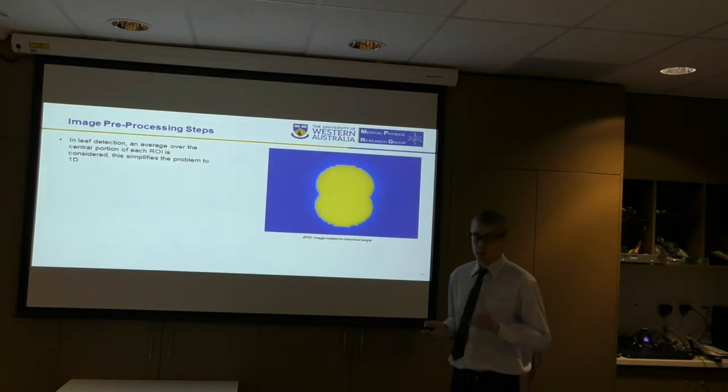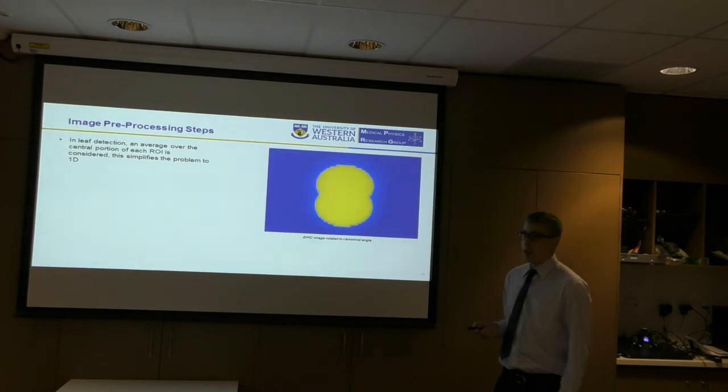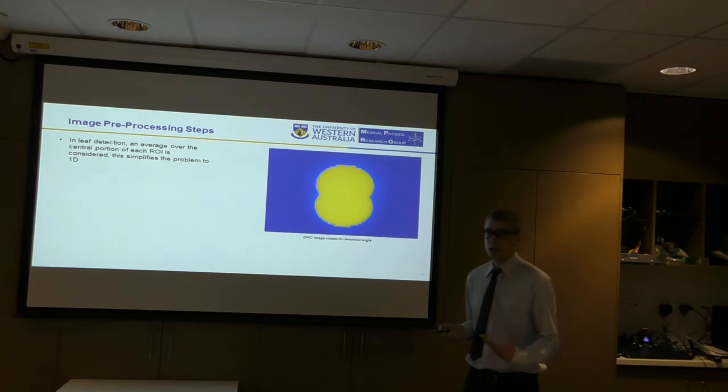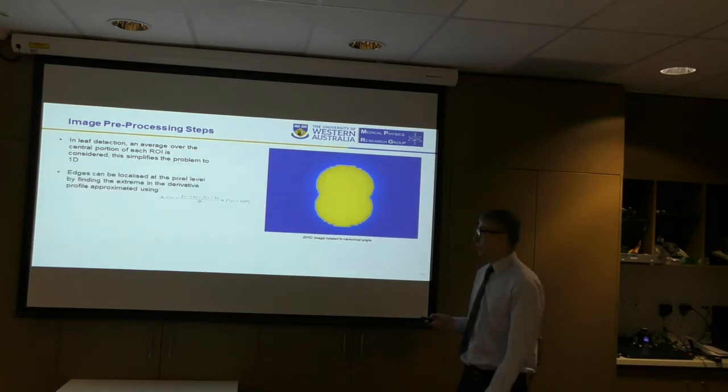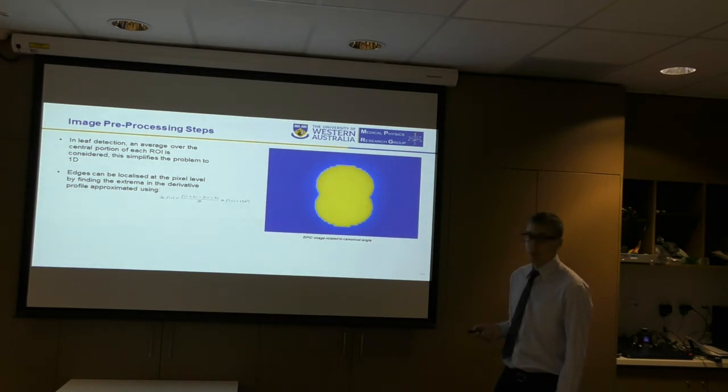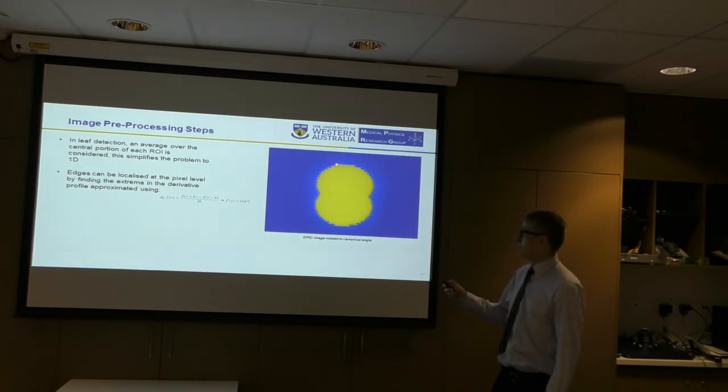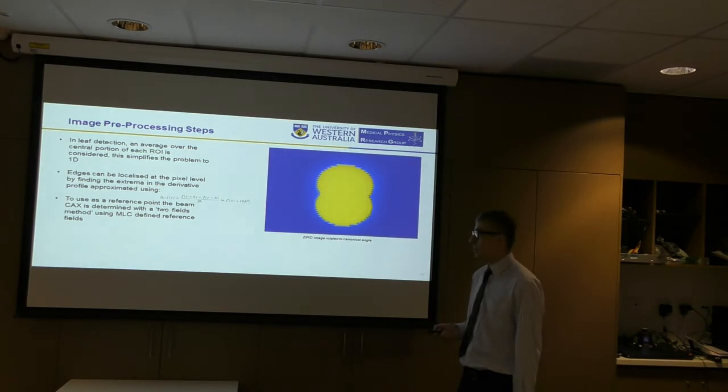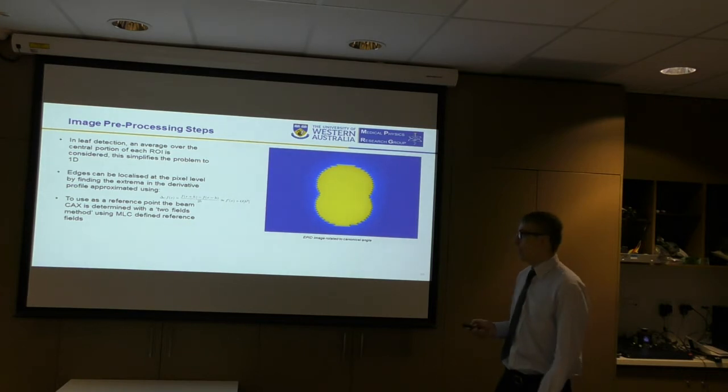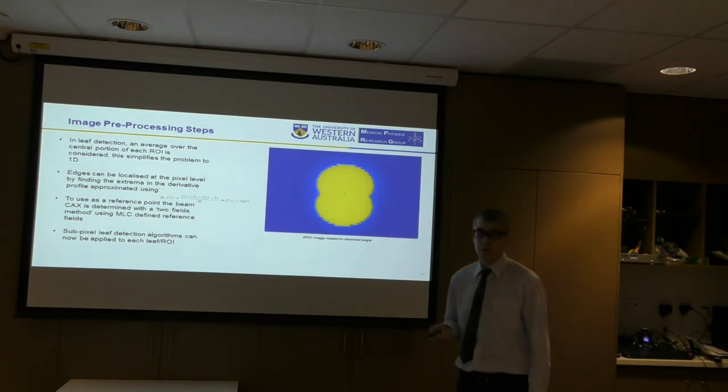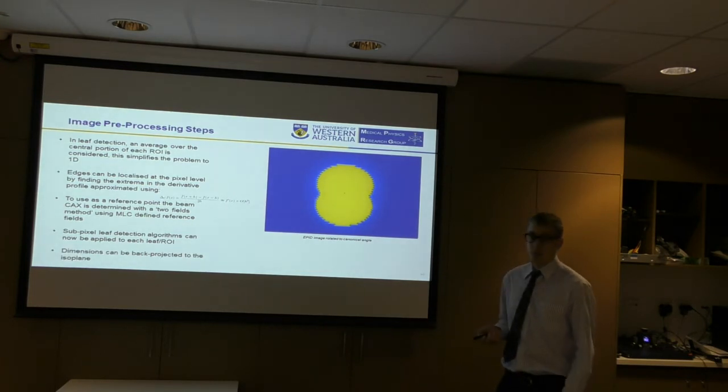The image is segmented into regions of interest that contain each leaf pair. To determine the regions of interest, we use the known leaf width at isoplane, and the approximate field height that is returned by applying the Canny edge detector. In leaf detection, an average over the central portion of each region of interest is considered. That way, for most of the algorithms, we can simplify the problem considerably by only treating it as a one-dimensional problem. Edges can be localized at the pixel level by finding extrema in the derivative profile, approximated using the centered difference. And I marked the edges found using that there, and that's the approximate regions of interest span at least three profiles around each of these triangles. To use as a point of reference, the radiation center, or the beam central axis, is determined using a two-fields method using MLC-defined reference fields, and that reference point is marked there. Sub-pixel leaf detection algorithms can now be tested. The dimensions found can be back-projected to the isoplane. Depending on the algorithm being tested, Wiener or Gaussian filtering is used for noise reduction.